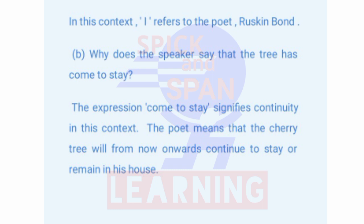Question B: Why does the speaker say that the tree has come to stay? The expression 'come to stay' signifies continuity in the context. The poet means that the cherry tree will from now onwards continue to stay or remain in the house.